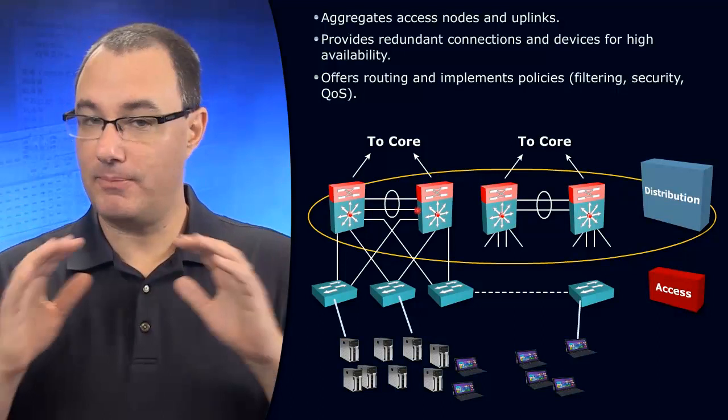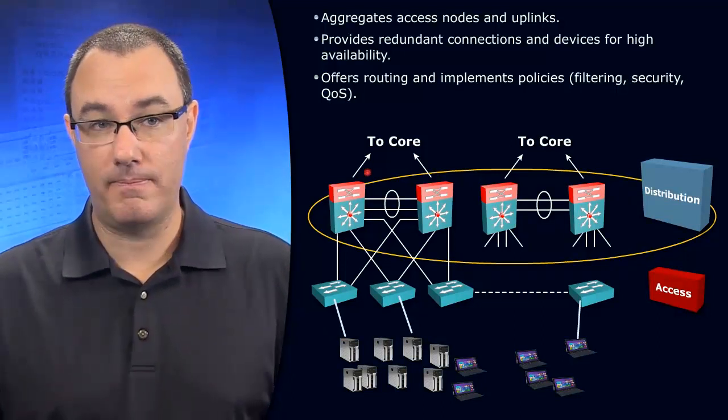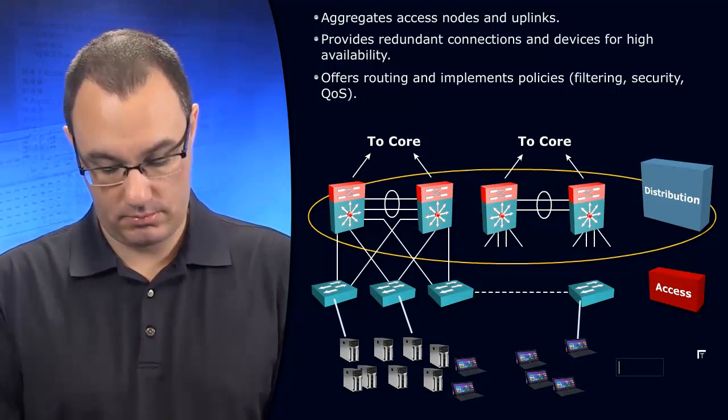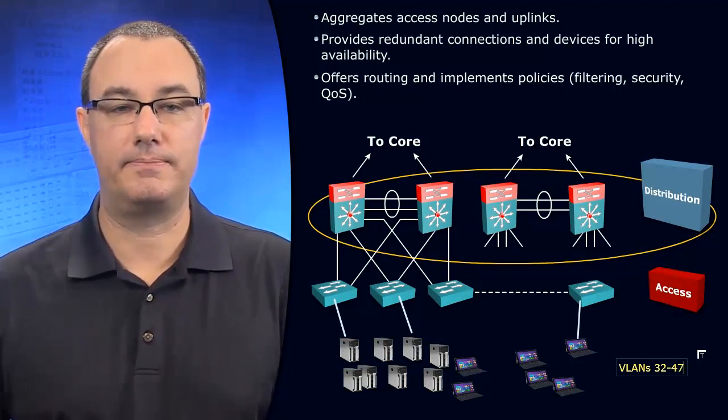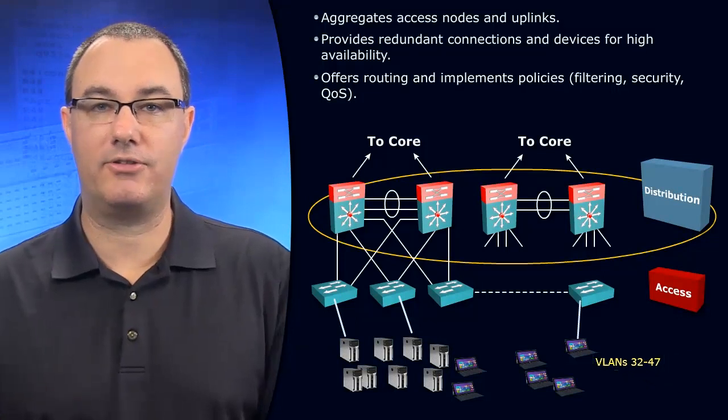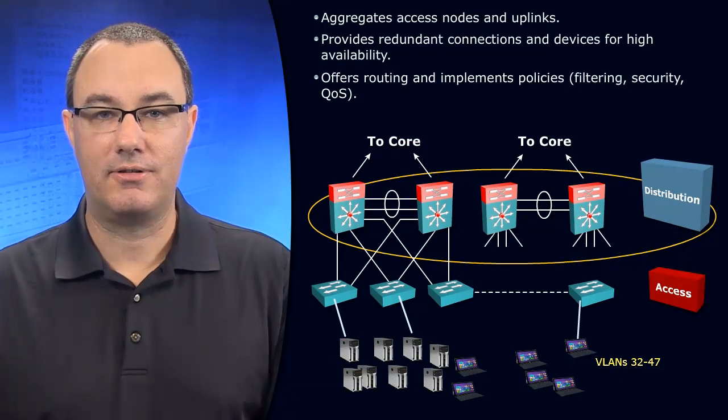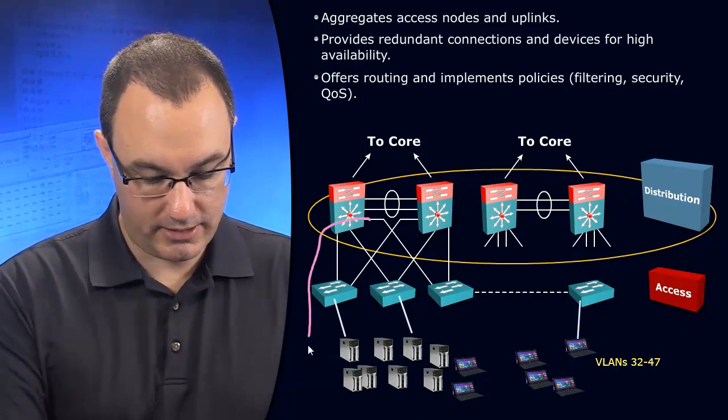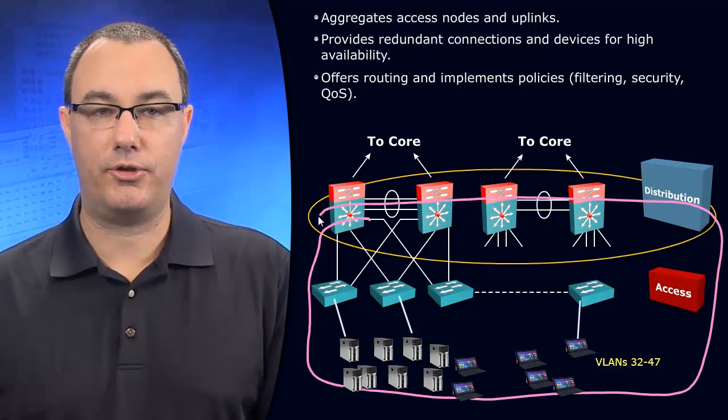Let's say we have VLANs 32 through 47 - 16 VLANs in total (it's inclusive of 32, so that's how we get the 16). And these VLANs might exist all throughout here, but they don't cross into the core.